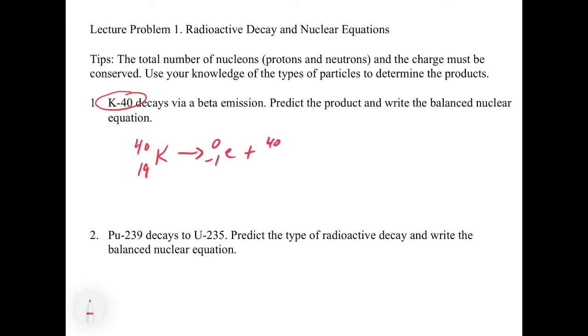Over here we have 19 in the atomic number spot. If we have a -1 over here, that means that we have to have one extra proton, so we're going to get 20 over here. If you look that up on the periodic table, that's going to be 40 over 20 calcium.